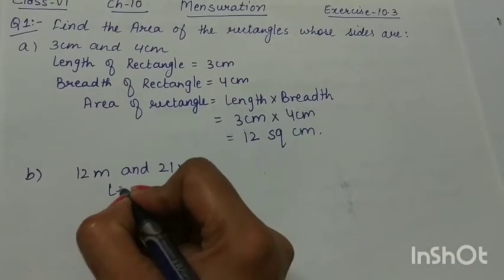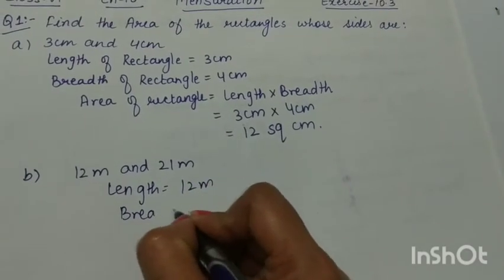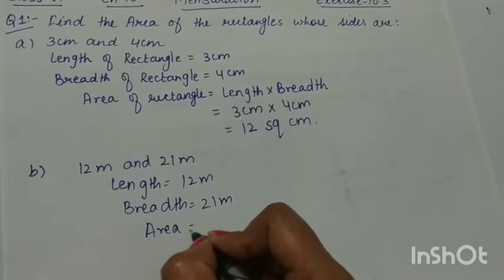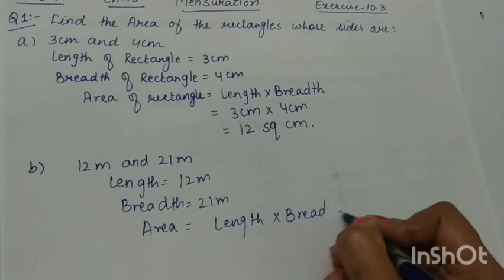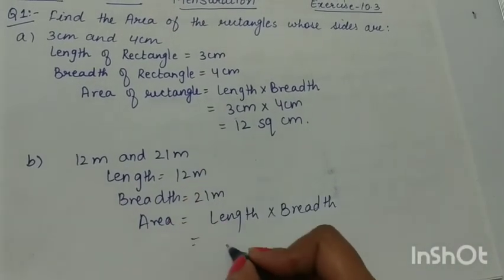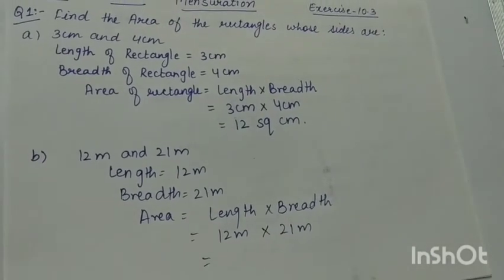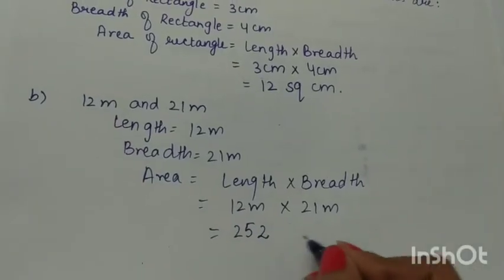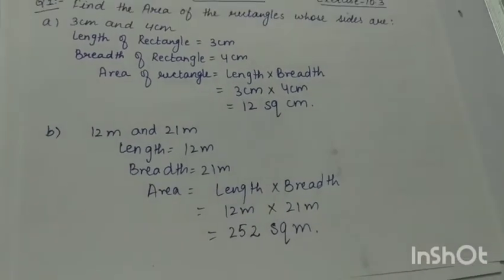Part B: the sides are 12 meters and 21 meters. Length of rectangle is 12 meters and breadth is 21 meters. Area of rectangle is length multiplied by breadth. Length is 12 meters and breadth is 21 meters, and 12 multiplied by 21 is 252. Units are square units, so this will be 252 square meters.